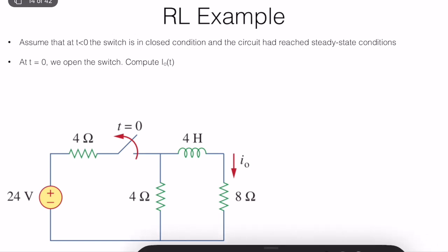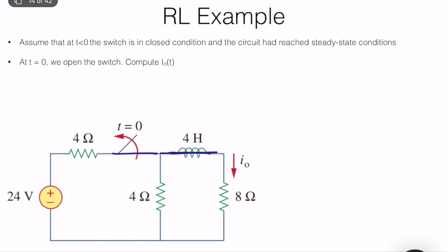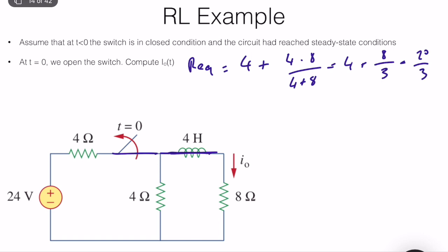In steady-state conditions an inductor acts like a short circuit. With the switch closed we analyze the simplified circuit to find I₀. The equivalent resistance is R_eq = (4 × 8)/(4 + 8) + additional resistance = 20/3 Ω. The source current is I_source = 24 × 3/20.